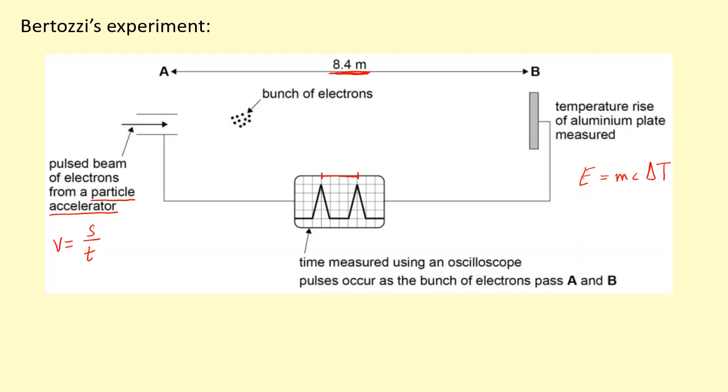C is the specific heat capacity, and delta T is the change in temperature. Because we have a bunch of electrons here, we'll have to divide this by the number of electrons in the electron beam to get the kinetic energy of each electron.